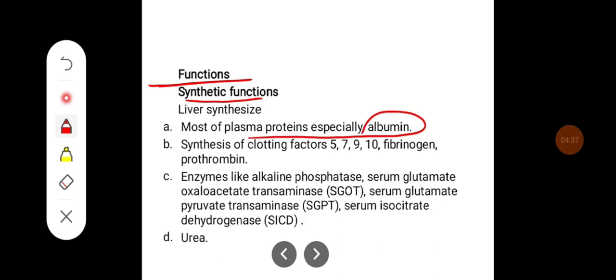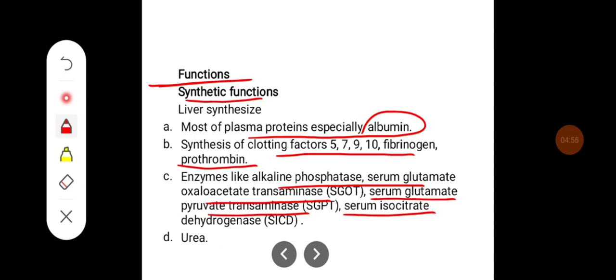Synthesis of clotting factors like 5, 7, 9, 10, fibrinogen and prothrombin occurs in the liver. Enzymes like alkaline phosphatase, serum glutamate oxaloacetate transaminase (SGOT), serum glutamate pyruvate transaminase (SGPT), serum isocitrate dehydrogenase (SICD), and urea — they are also synthesized in the liver.